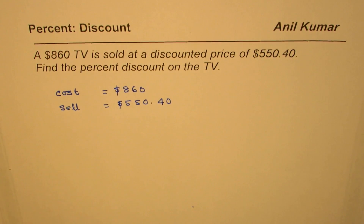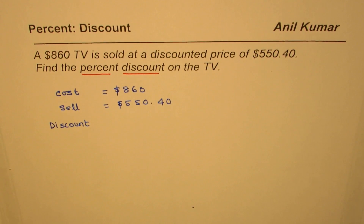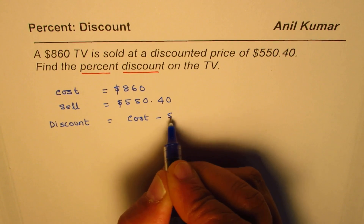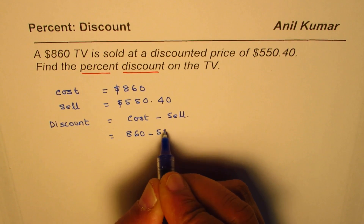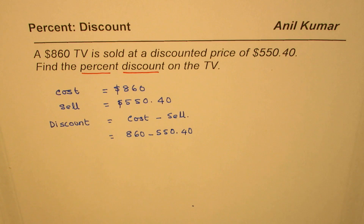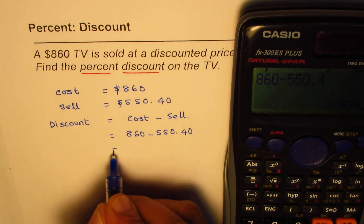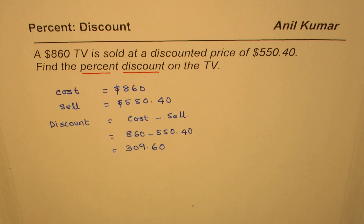So not just discount — we need to find percent discount. First, let us find the discount. Discount really means what is less on the cost price, so it is cost price take away the selling price. In our case, it is 860 take away 550.40. Using the calculator: 860 minus 550.40 equals 309.60. So $309.60 is the discount.